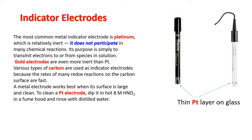The most common metal indicator electrode is platinum. Platinum is a relatively inert metal. It does not participate in most chemical reactions in solution. Its purpose is simply to transmit electrons from or to species in solution. Gold electrodes can be used instead of platinum, but again they are less convenient.